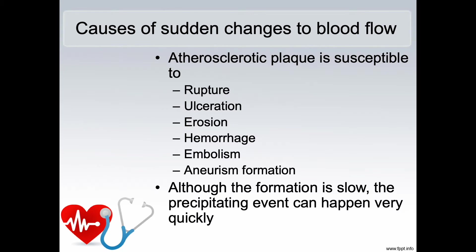Sudden changes to blood flow are caused because atherosclerotic plaque is susceptible to rupture, ulceration, erosion, hemorrhage, embolism, and aneurysm formation. Although the formation of the plaque is quite slow, one of those precipitating events can cause changes very quickly and suddenly completely interrupt the blood flow to the affected tissues.